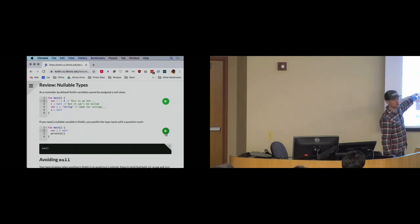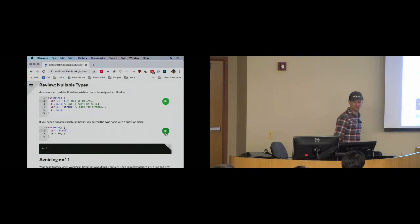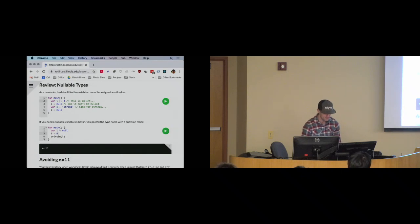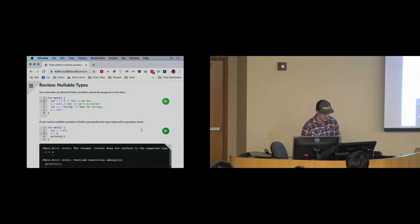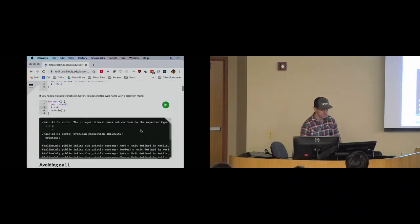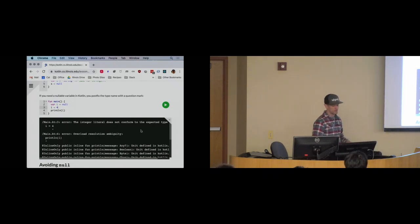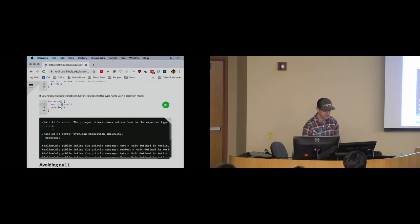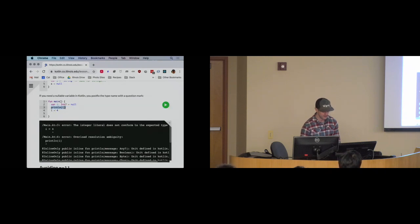If you try to assign null directly, the type of the variable is going to be inferred as a nullable object. If you then try to assign it another value, Kotlin gets angry because the type it inferred for i is a nullable object. So here, if I say this is a nullable int, now I can set its value to other things and it's going to work fine.